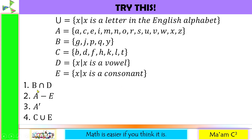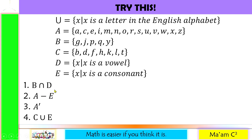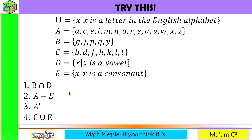Number 1: B intersection D. This means the common elements found in set B and set D. Set B contains the fall letters: G, J, P, Q, Y. Set D contains the vowels: A, E, I, O, U. There are no common elements, so our answer is the null set.